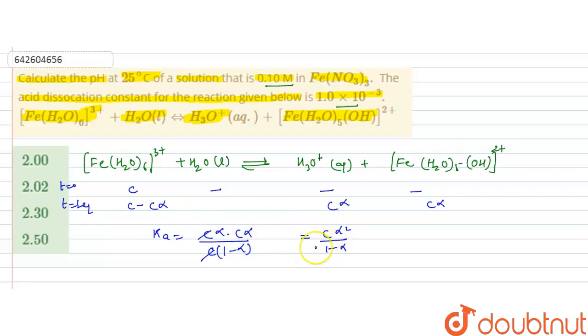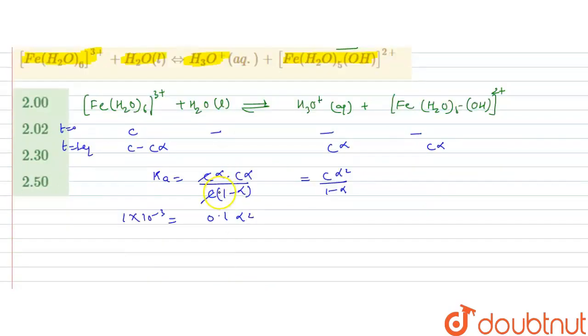Now, if we calculate alpha from this, because we are given the concentration and dissociation constant, so Ka is given to us that is 1 into 10 raised to the power minus 3 and concentration is given 0.1 alpha square divided by 1 minus alpha. So, if we calculate alpha from here, so that is equal to 0.095.